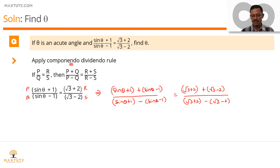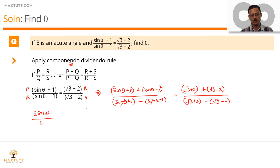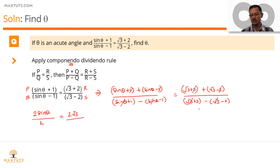Let's cancel whatever terms can be cancelled. The +1 and −1 cancel in the numerator of the LHS, giving 2 sin θ. In the denominator, sin θ cancels with sin θ, and 1 − (−1) gives 2. On the RHS, the 2 and −2 cancel in the numerator to give 2√3, while √3 cancels with √3 in the denominator, and 2 − (−2) = 4. So we have sin θ = √3/2.